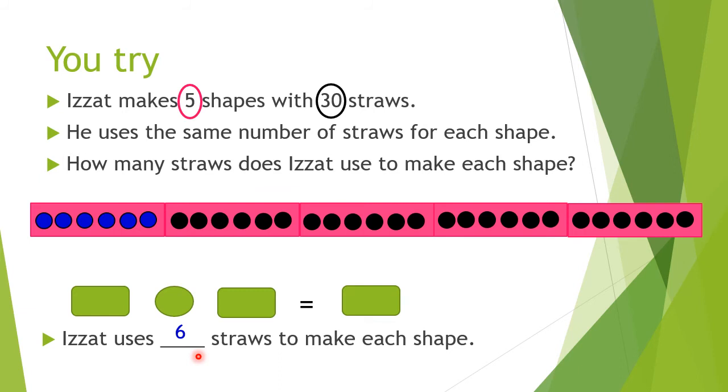Now we write the division sentence. The bigger number must come first. So bigger number 30, divided by 5 the smaller number, and then answer 6.